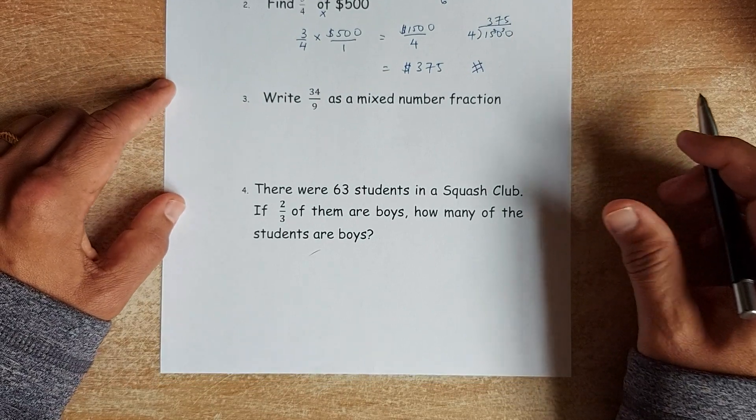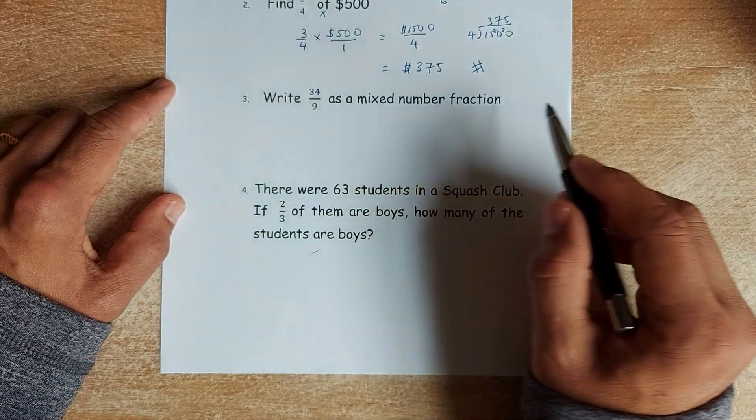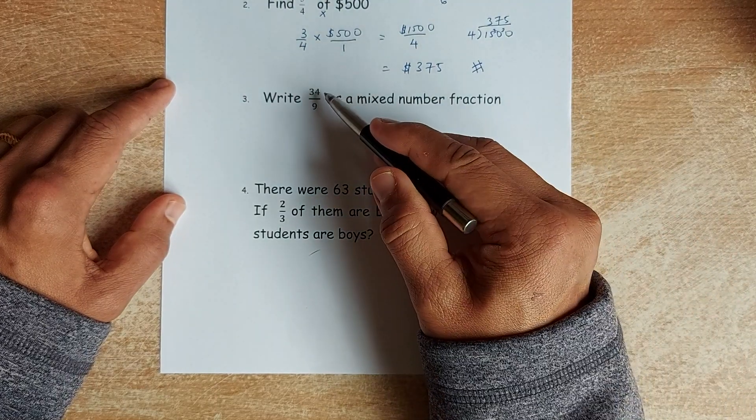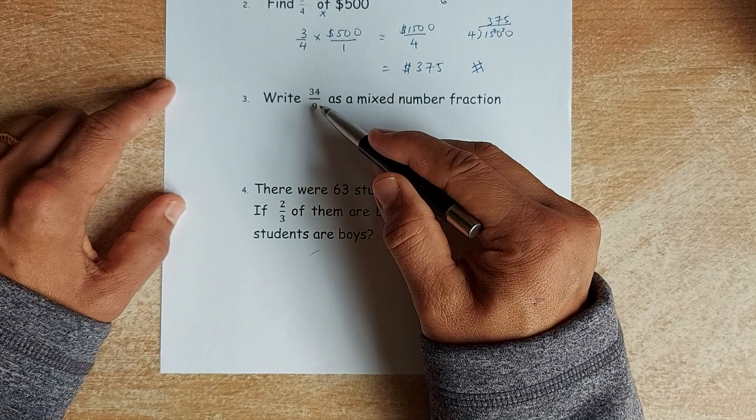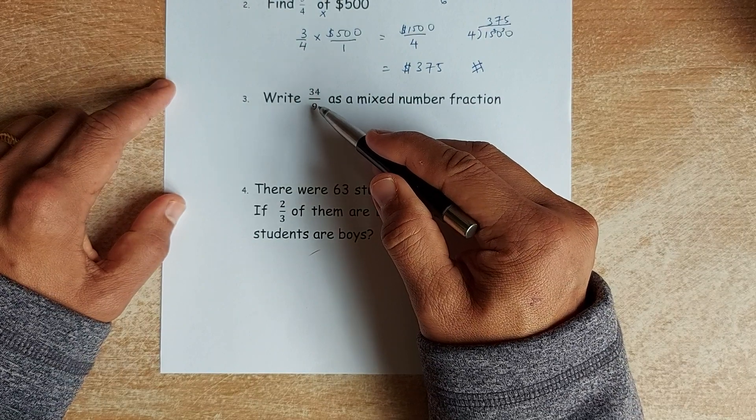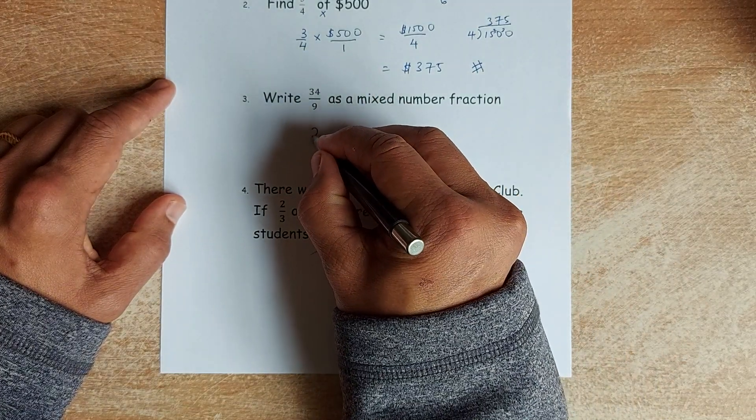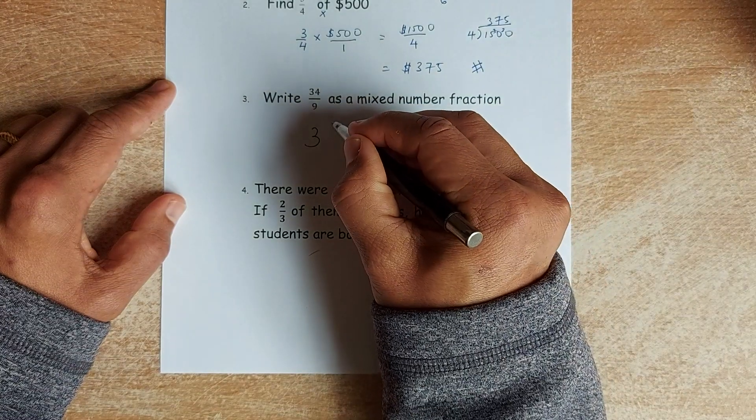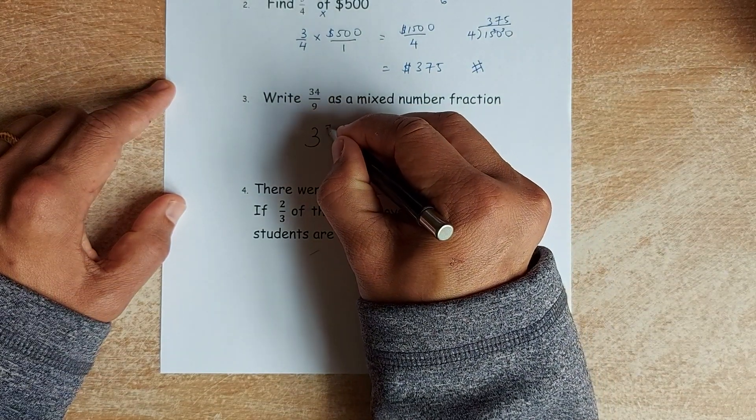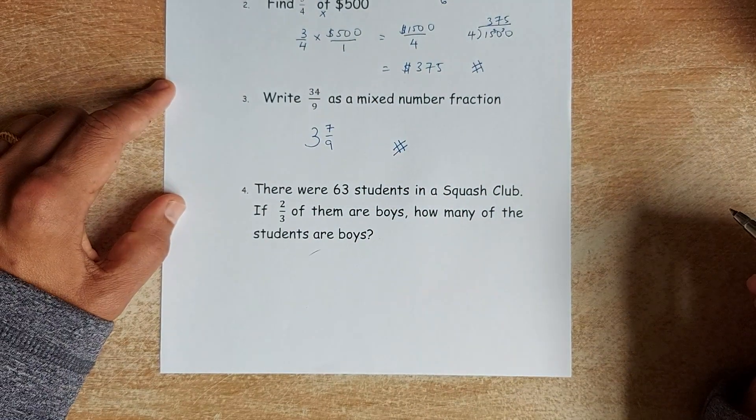Now, we will continue to question 3. To convert an improper fraction to a mixed number, you take 34 is to 9. So 1 times 9 is 9. 2 times 9 is 18. 3 times 9 is 27. 4 times 9 is 36. So 36 is more than 34. So the biggest number is 3. So 3 times 9 is 27. And the remainder is 7. So 7 over 9, which is 3 and 7 over 9. And that is the third question.